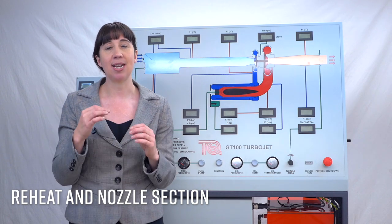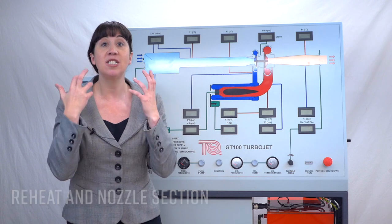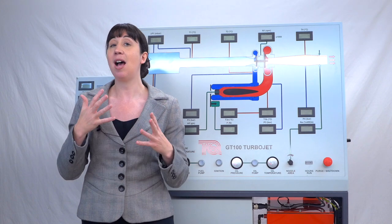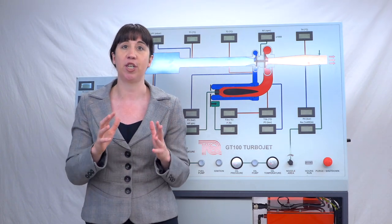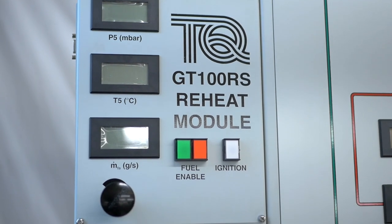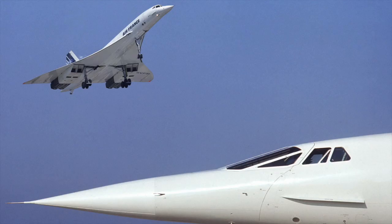Engineers add reheat and afterburners to turbojets to raise the exhaust temperature which raises the velocity and most usefully increases the thrust. In practice, afterburners can double the thrust of a turbojet but the downside is the relative doubling of fuel consumption. To cite a famous example, Concorde engines use reheat technology.